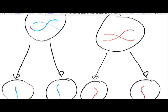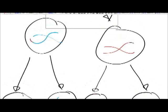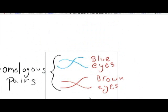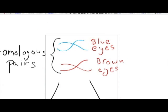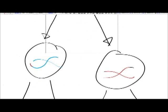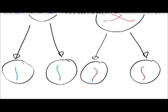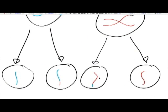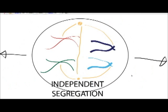This produces four gametes, each with a haploid number, because there are 2n numbers of chromosomes in the original cell, and there is 1n in the gametes produced.